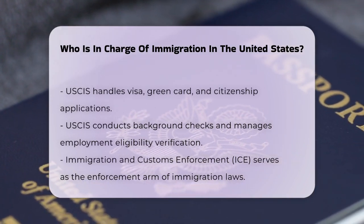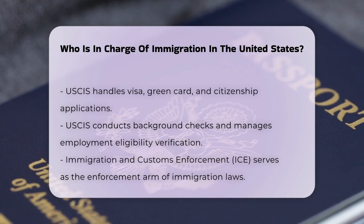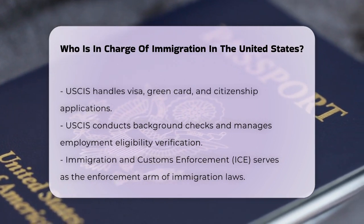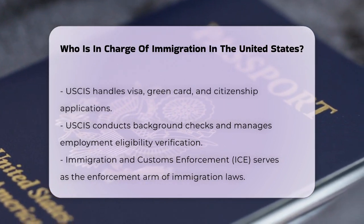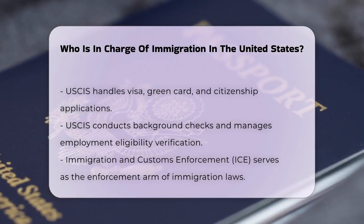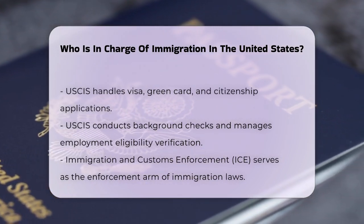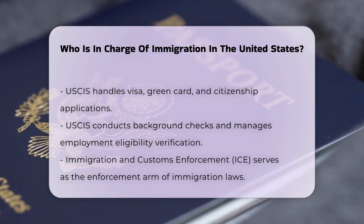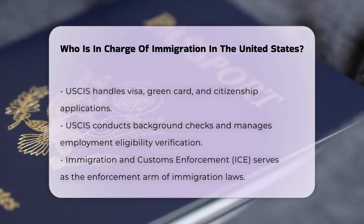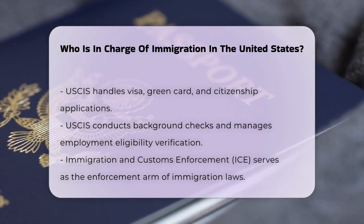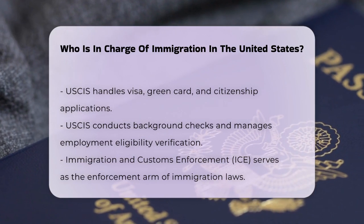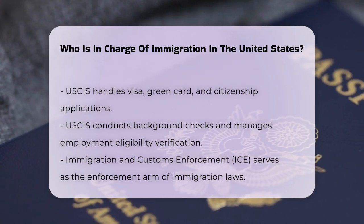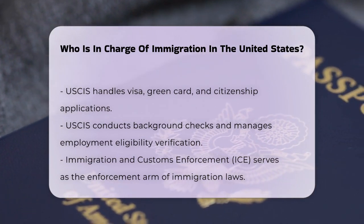USCIS is the agency that oversees the process of lawful entry into the United States. It handles applications for visas, green cards, and citizenship. USCIS also conducts background checks, collects biometric information, and manages the E-Verify system to check employment eligibility.